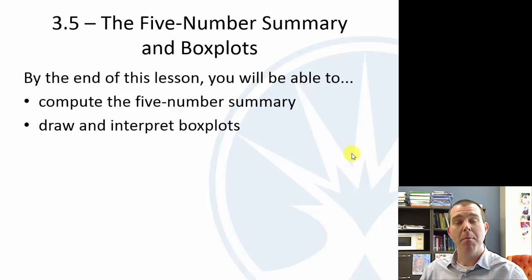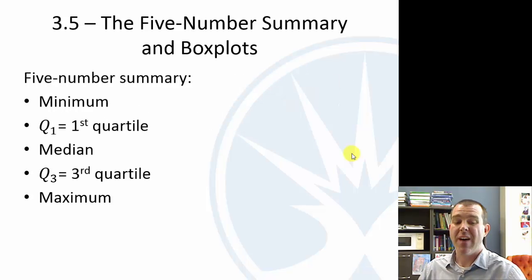Okay, a couple more things. We are going to touch on some of the outlier ideas from 3.4, but we're going to jump to 3.5 now and talk about the five-number summary and box plots. So the five-number summary, what we call the five-number summary, are these five numbers: minimum, first quartile, median, third quartile, maximum. So if I ask you to find the five-number summary, that is it. Find those five numbers.